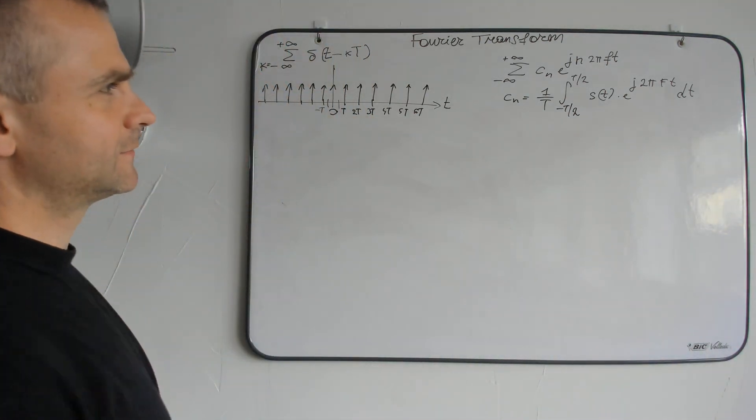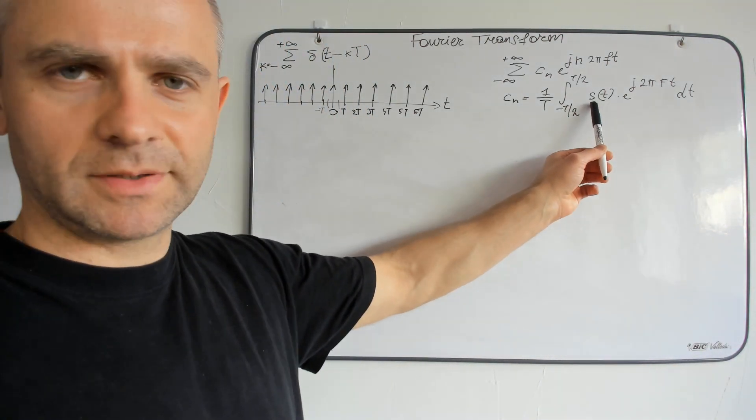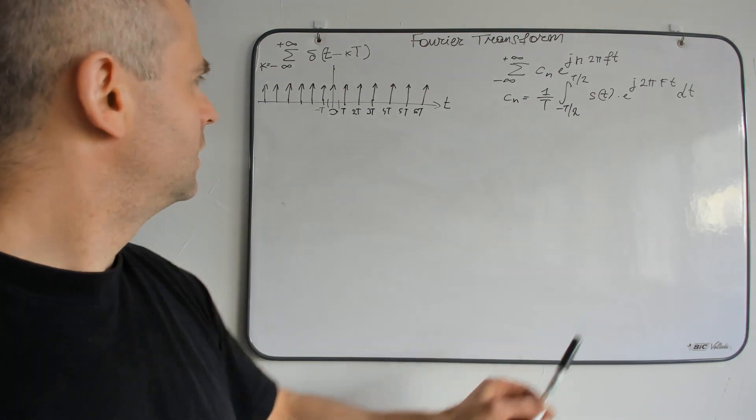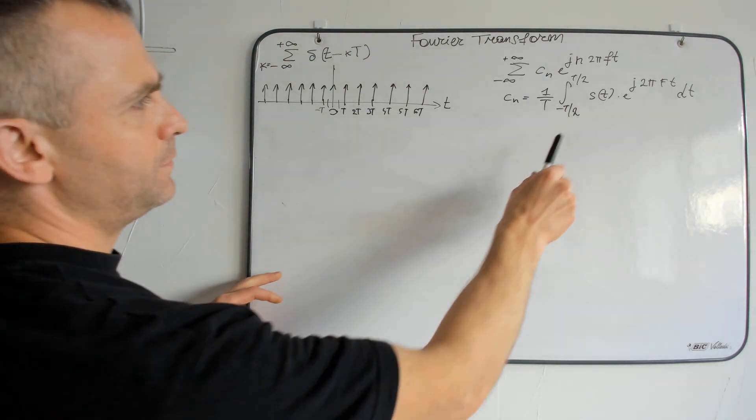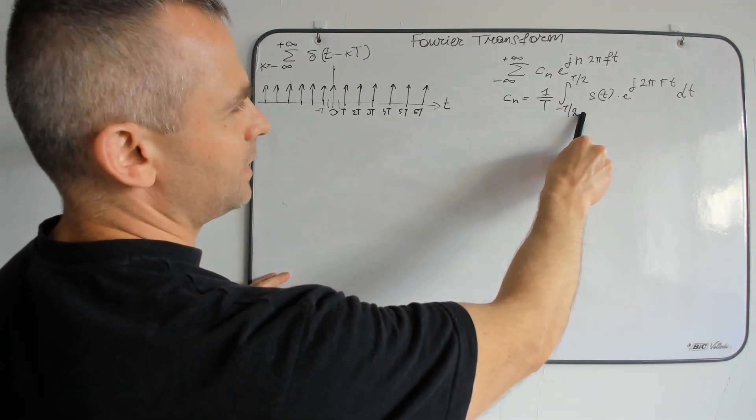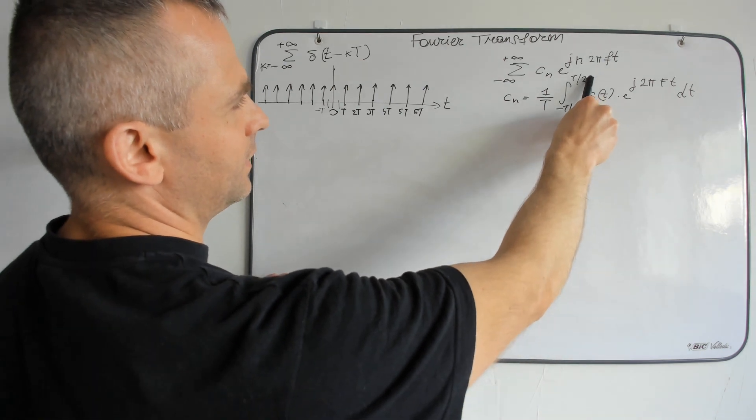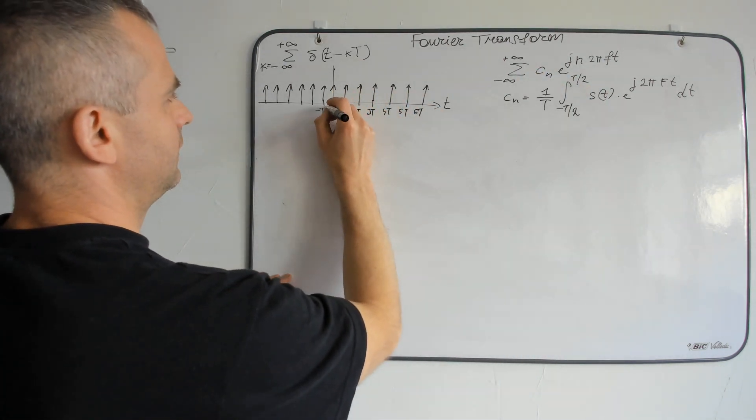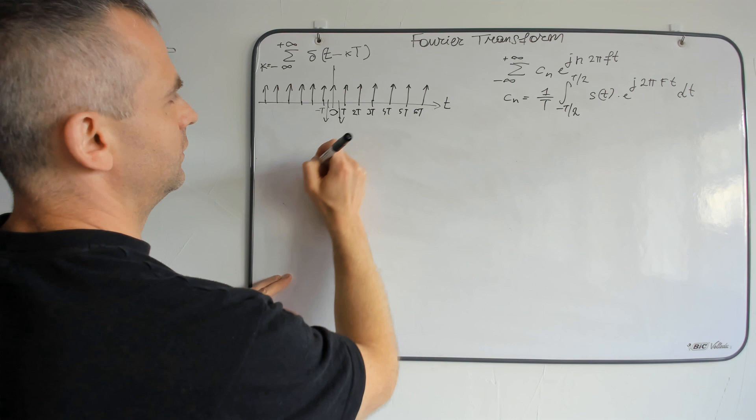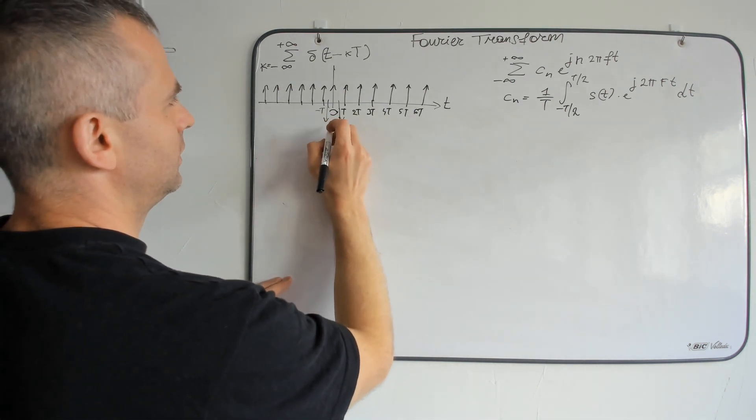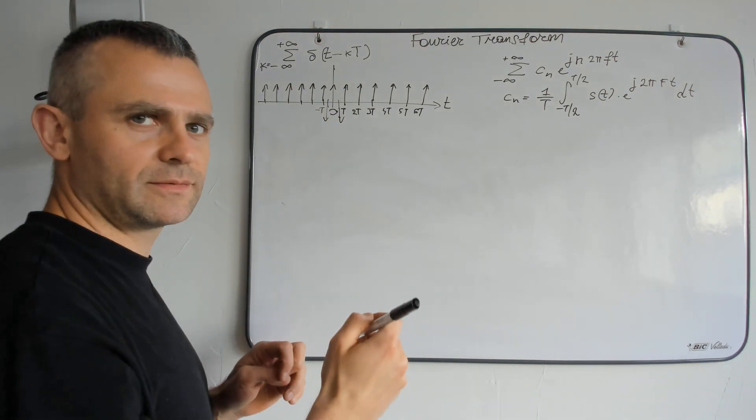But what's the value of the sin? Between minus half a period and half a period here, the value of our Dirac comb is a delta function.